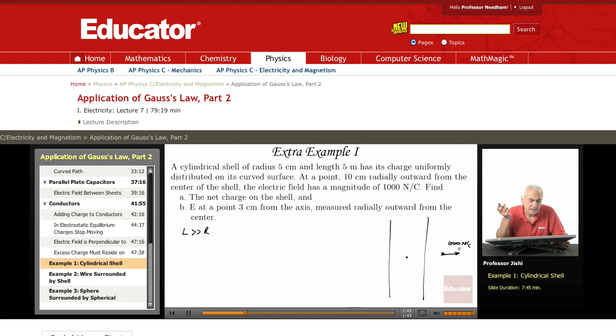So we would like to find the net charge on the shell. So here we're very far from the edges. The edges are 2 and a half meters away this way, 2 and a half meters away this way. And the point here is only 10 centimeters away. So if you know the electric field for a cylindrical shell, use it. Or you just do it from scratch.